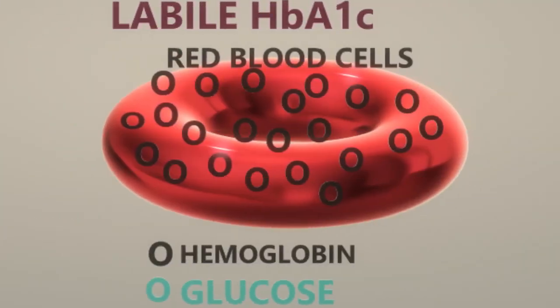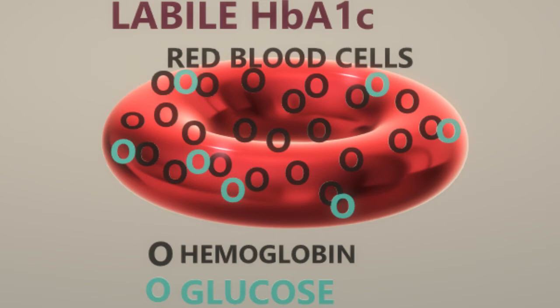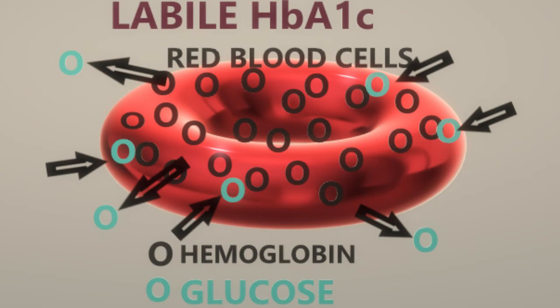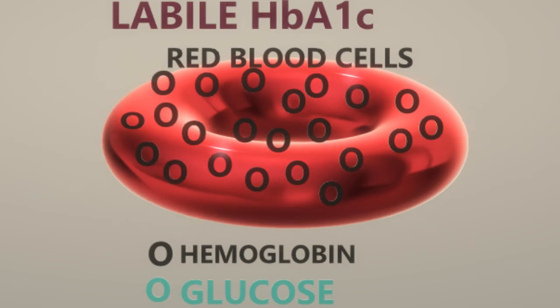Contraindications: Pre-HbA1c, also called labile HbA1c, is an intermediate in the synthesis of HbA1c, having reversible binding of glucose to hemoglobin as a Schiff base. The amount varies person to person and could fluctuate HbA1c levels. Therefore, sufficient removal of this fraction is important for accurate estimation.